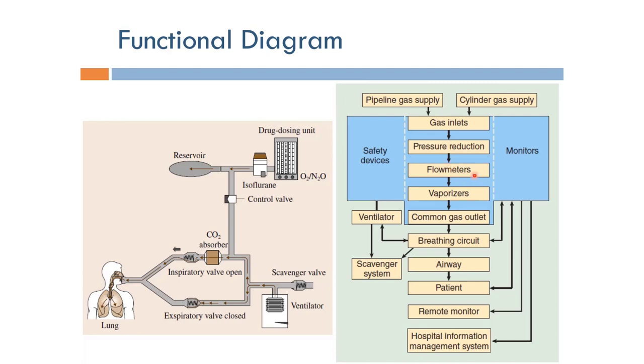The gases then go through a flow meter and vaporizer. The flow meter controls the mixing of oxygen and nitrous oxide, and the vaporizer is the device responsible for adding the inhalation anesthetics.